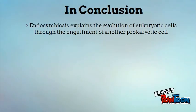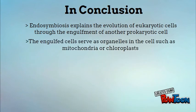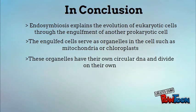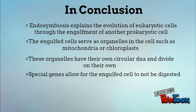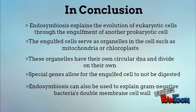In conclusion, endosymbiosis explains the evolution of eukaryotic cells through the engulfment of another prokaryotic cell. The engulfed cells serve as organelles in the cell, such as mitochondria or chloroplasts. These organelles have their own circular DNA and divide on their own. Special genes allow for the engulfed DNA not to be digested. Endosymbiosis can also be used to explain the gram-negative bacteria's double-membrane cell wall.